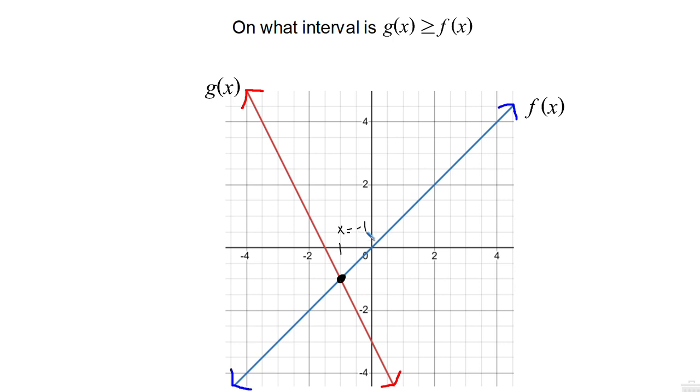So then we just have to think about what does it mean for g(x) to be greater than f(x). It means that it has a larger y value. Well, the larger y values are higher up on our coordinate plane. So we should be able to see that all of this area over here is where g(x), the function in red, has a larger y value than f(x), the function in blue.